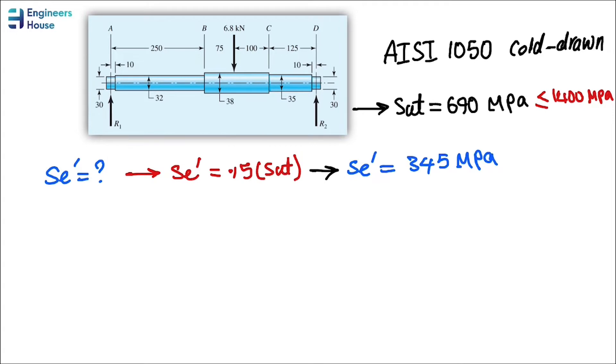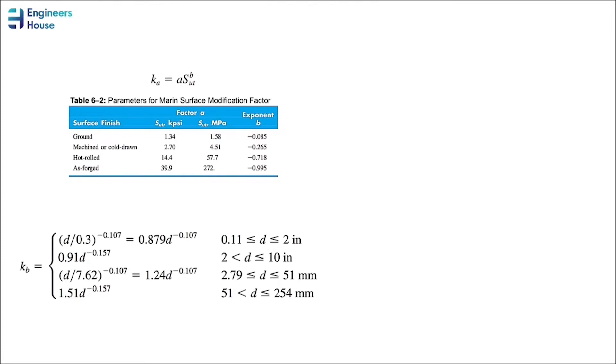Now that we have Se prime, we should find out the Marin factors. But why? Because this Se prime is experimental, and we need to find out something realistic - we're looking for the real Se. For finding out Marin factors, we begin with Ka. As you know, we have a machined surface. For a machined surface, we are given the amounts of a and b, so all we have to do is plug in these values in this formula. Sut is powered by b. This equation will give us Ka.